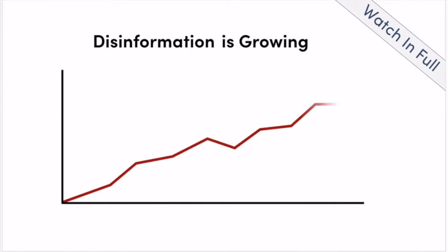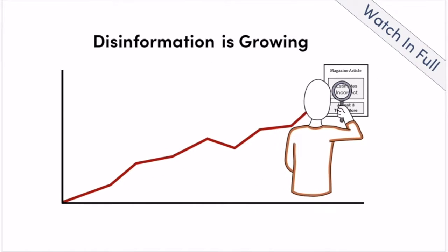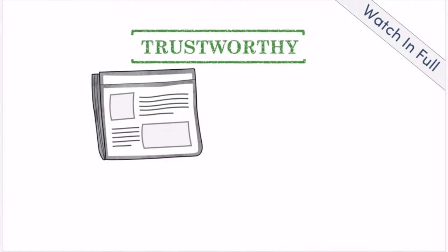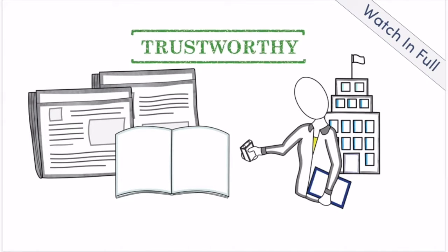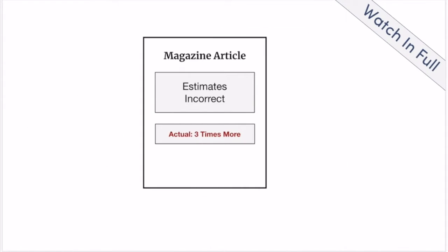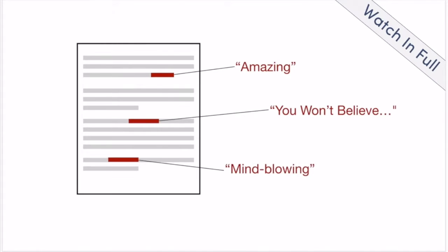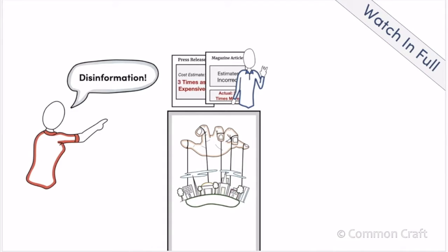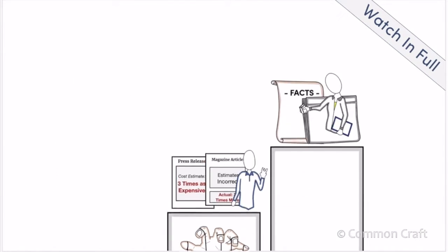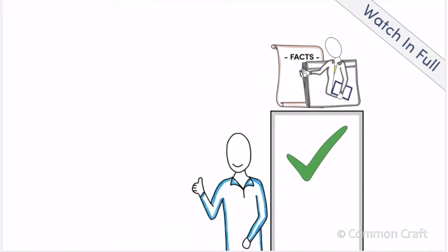Today, disinformation is growing and becoming more difficult to detect. To avoid spreading it, use information from trustworthy sources like respected newspapers, journals, and well-known journalists. If the information seems misleading, research the writer and publisher and look for bias. Be skeptical of messages that seem exaggerated or provocative. By learning to detect and avoid disinformation, we can prevent others from unfairly manipulating our opinions and help facts and trusted information rise to the surface.